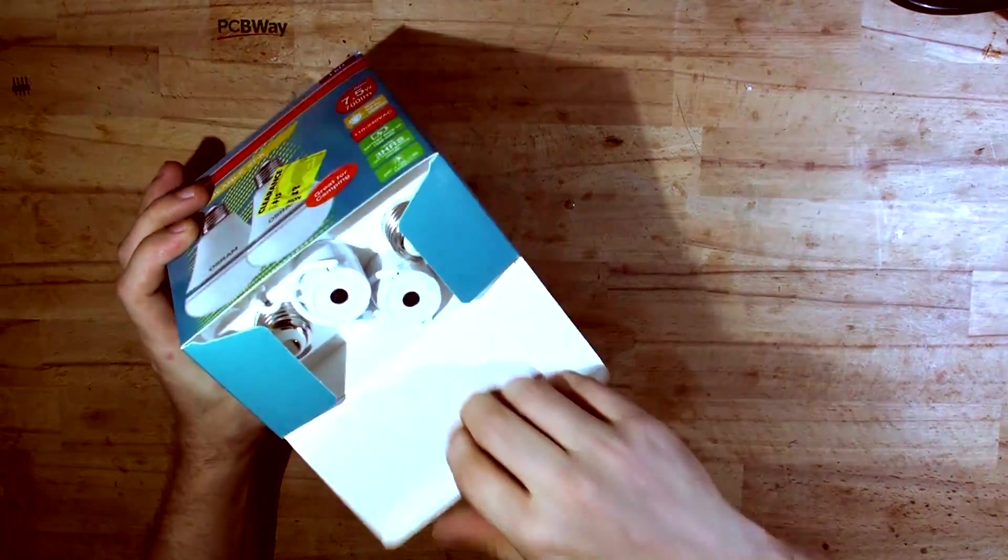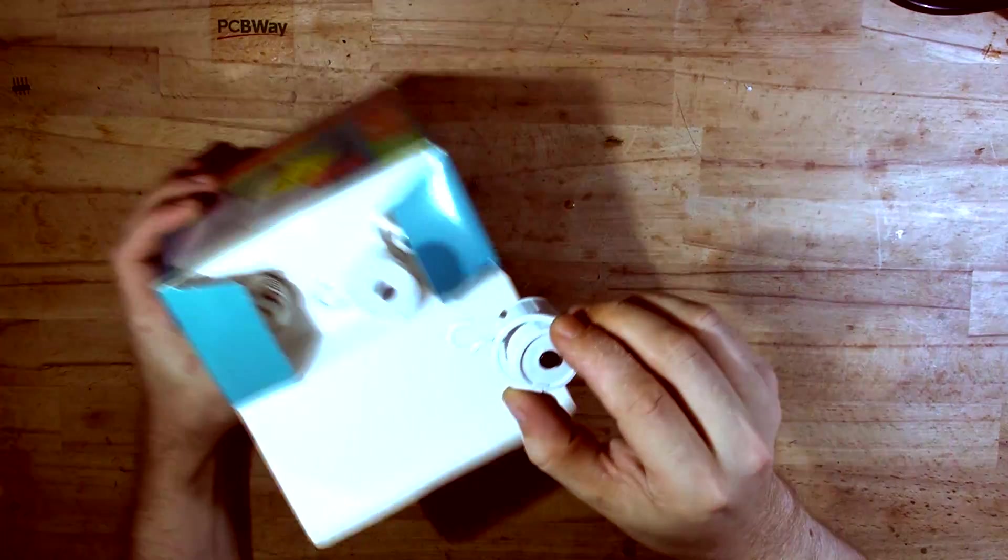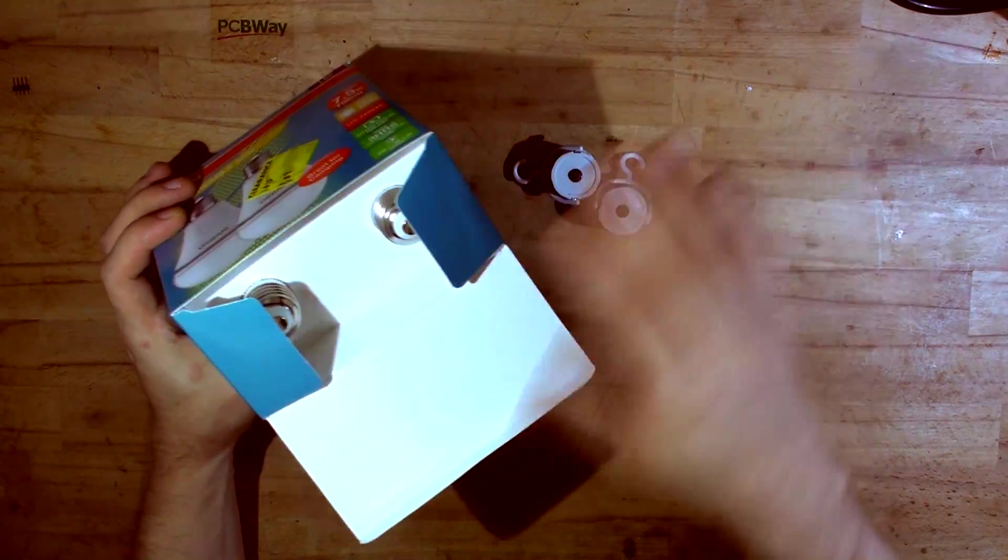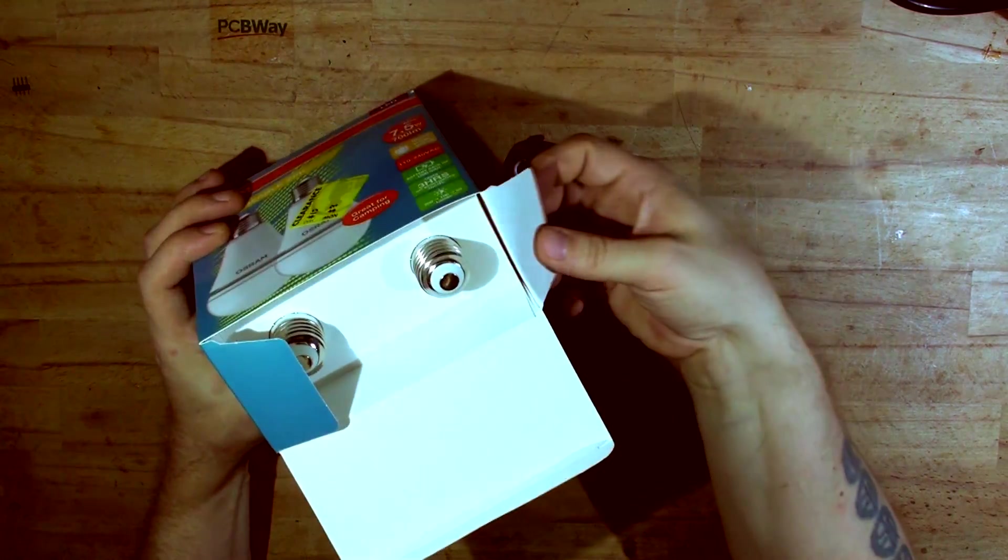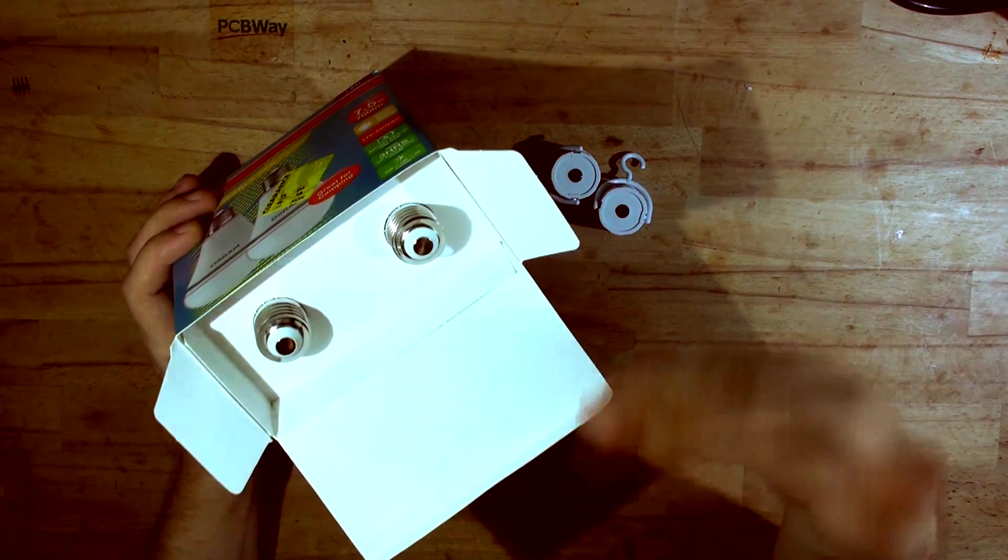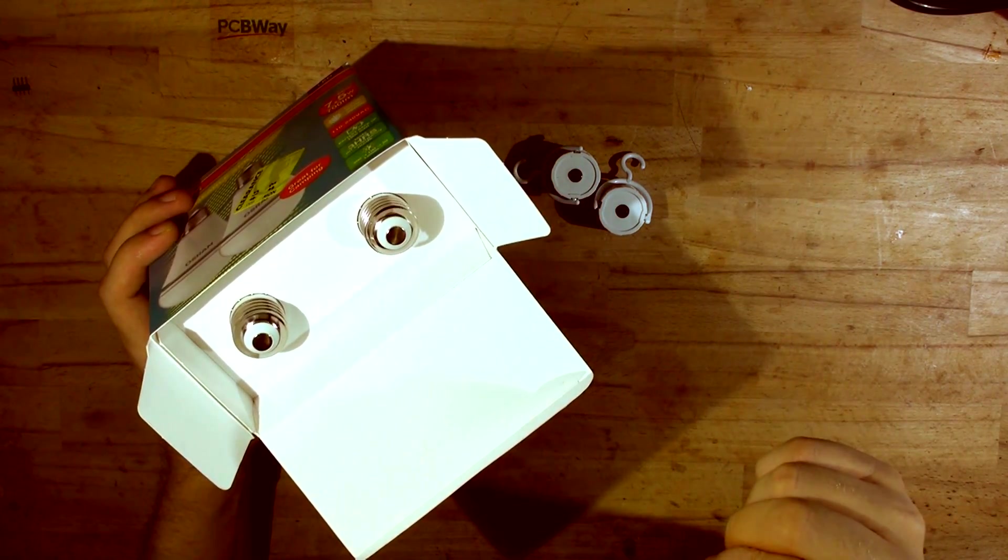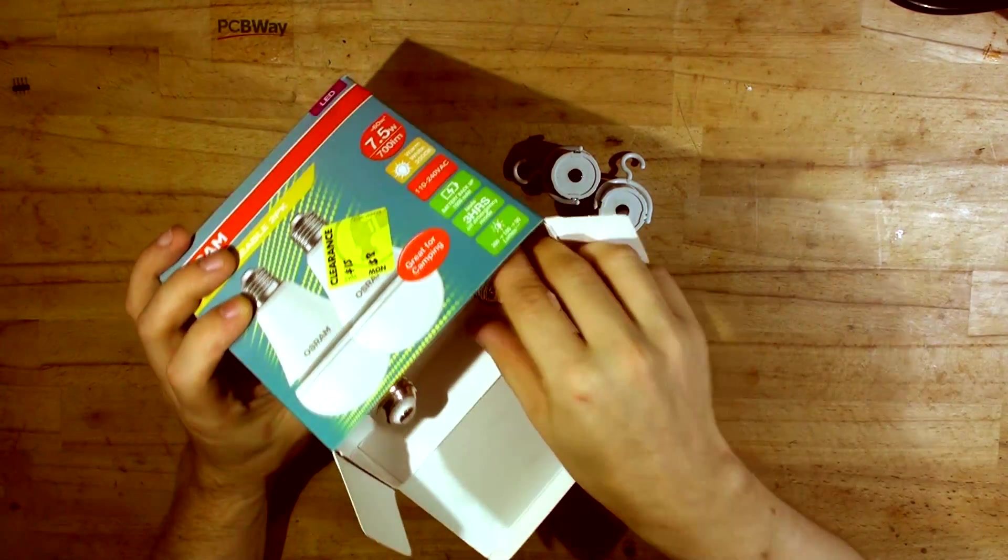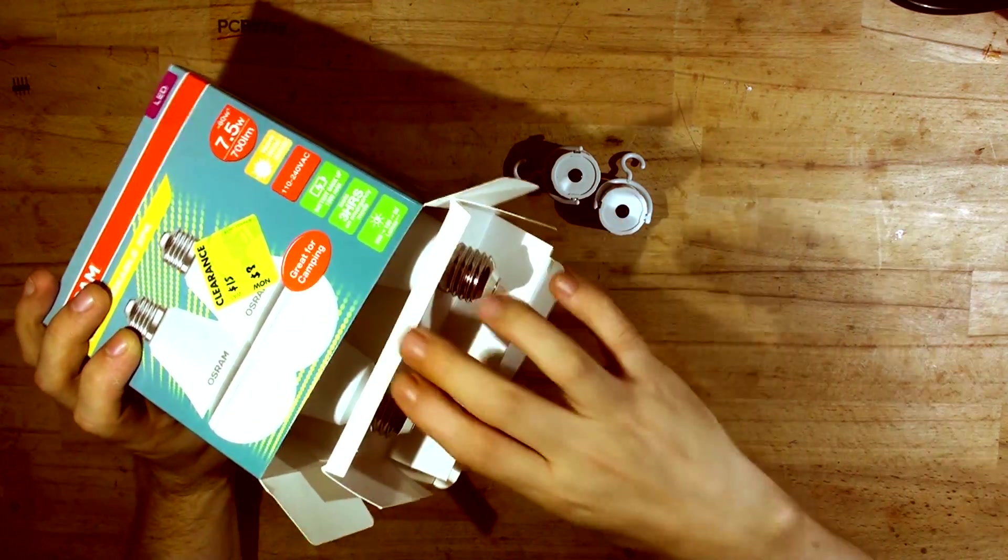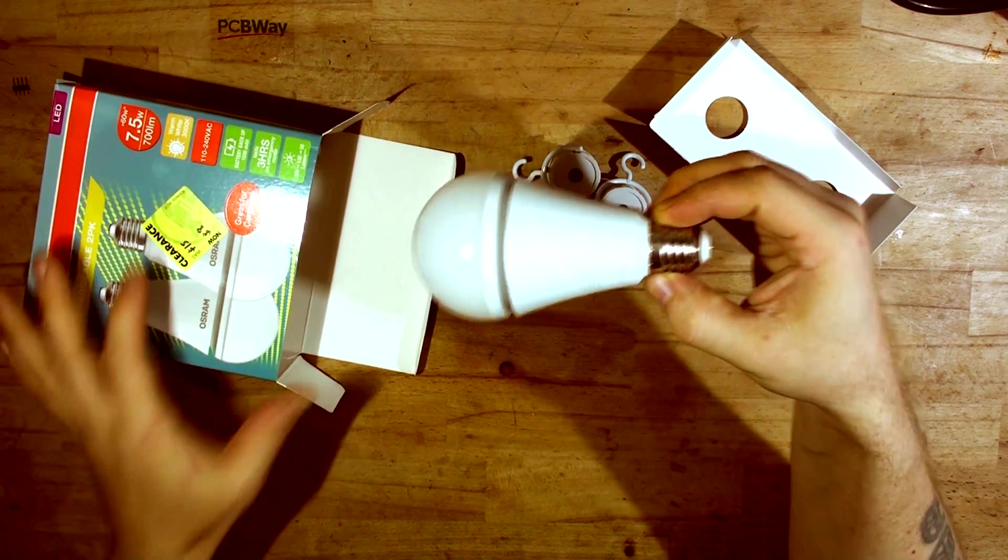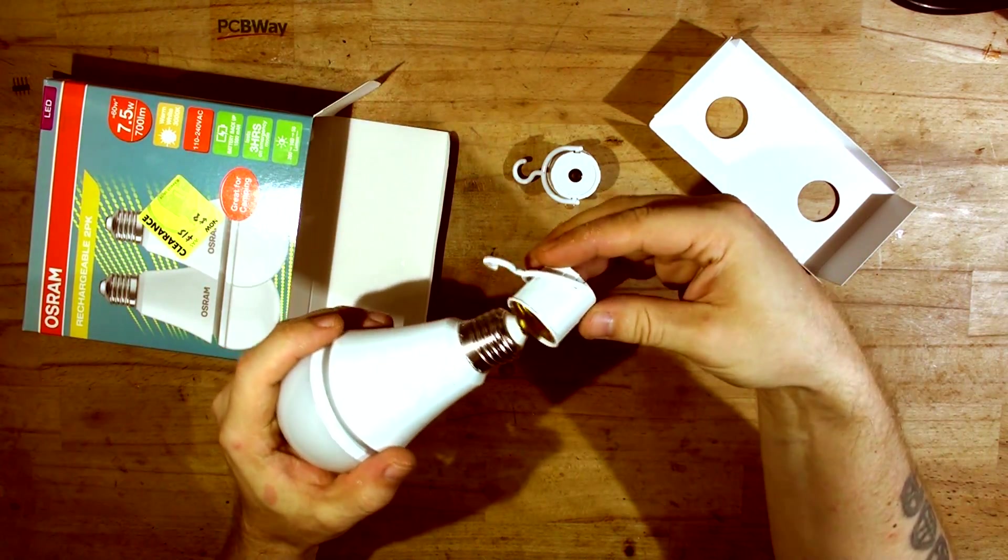They come with little sockets so they can be used as a standalone, doesn't have to be screwed into your socket. When you do screw it into your socket it will work as a normal light bulb at 240V. If the power fails you can use your switch and you can still turn them on. I will explain how in a second. But if you don't have a switch or you want to have it portable or take it with you for camping, you can simply screw that on.